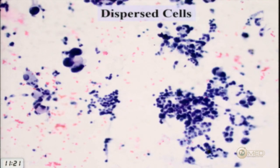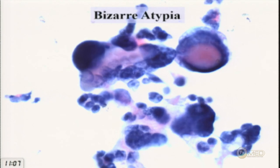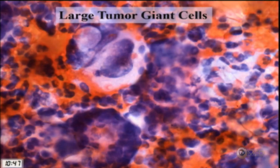An ultrasound-guided FNA was performed. The FNA shows an interesting dispersed population of cells and loosely cohesive groups, with some bizarre-looking cells at higher magnification — huge smudgy dark nuclei with inclusions, and a population of smaller dwarf cells in the background. A very bloody aspirate with these big ugly bizarre tumor cells with large inclusions and smaller atypical epithelioid cells.